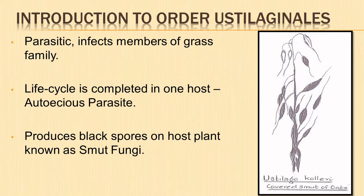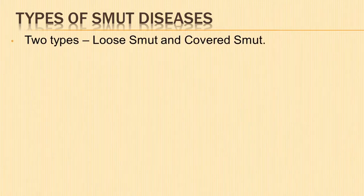All species of the genus complete their life cycle on one host and are known as autoecious parasites. They produce a black, sooty, powdery mass of spores on the host plant and are commonly known as the smut fungi. There are two kinds of smut diseases: loose smuts and covered smuts.